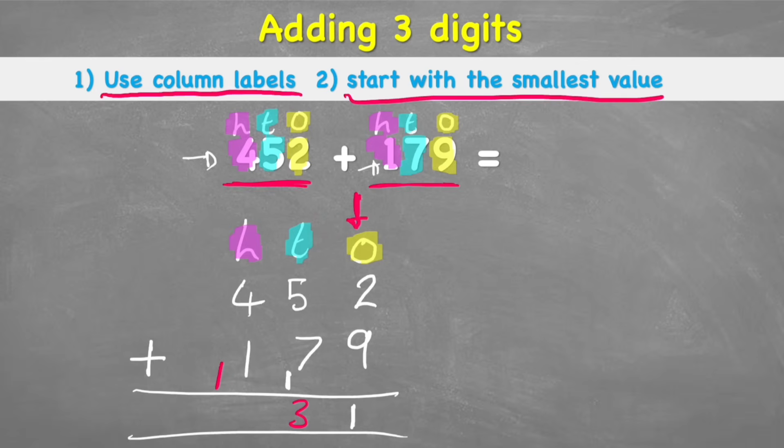Awesome. Now I can start to work out my hundreds. And I have a four plus a one plus my new one. And that equals six. So I can fill my answer in. And I have a total answer of 631. Don't forget to always finish your question by finishing the number sentence. So 631 goes up here. Give myself a tick. Awesome.